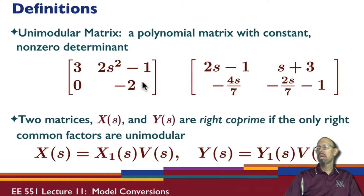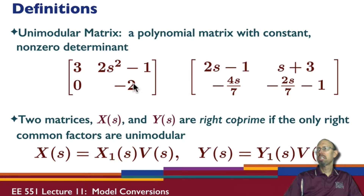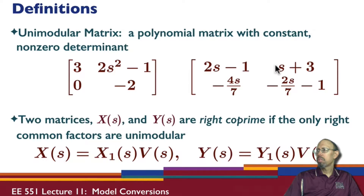In this case the determinant is 3 times minus 2, which is minus 6 — that's a constant nonzero determinant. If you compute the determinant of the other matrix, you again find it is also a constant nonzero determinant. So these are unimodular matrices.